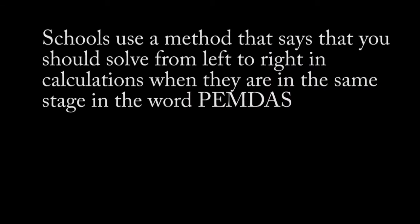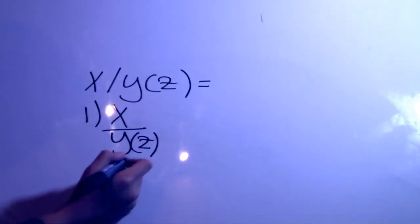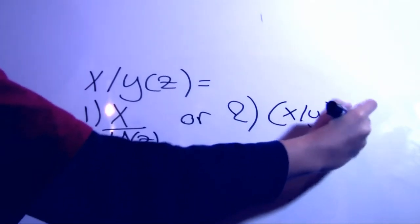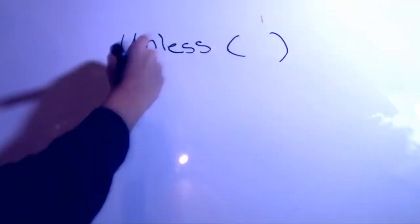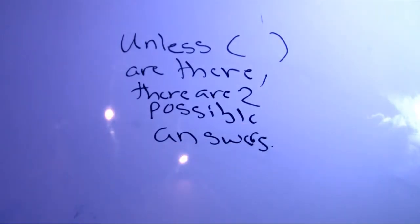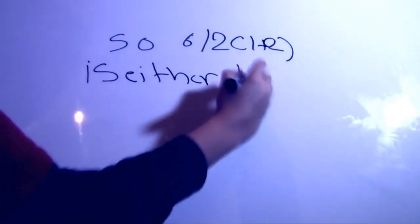Schools use a method that says you just start from left to right in calculations when they are in the same stage, and the order of operations like division and multiplication. Well, this isn't really a convention, so x divided by y into z can mean different things — unless parentheses are given to determine which operation starts first, there are two possible answers. So 6 divided by 2 into 1 plus 2 can mean 1 or 9.